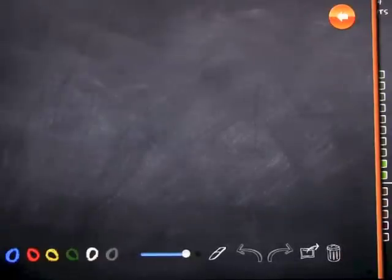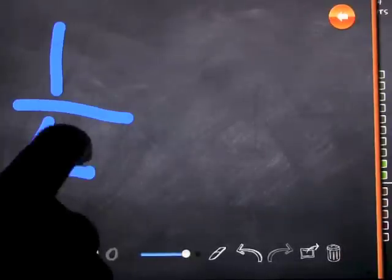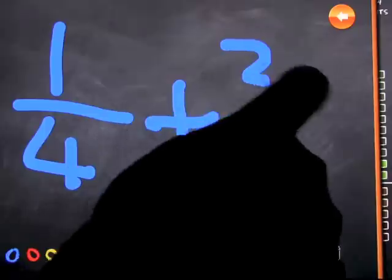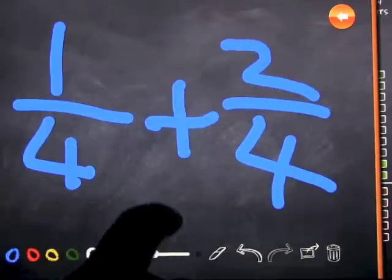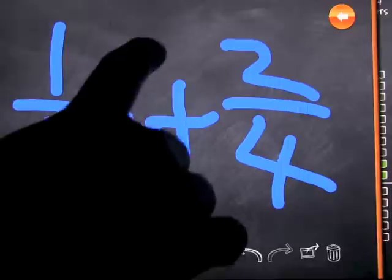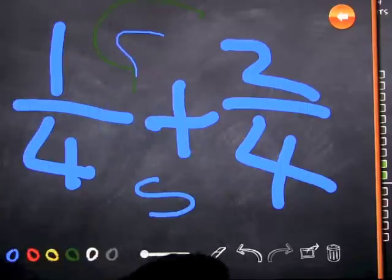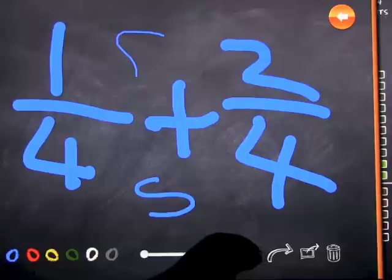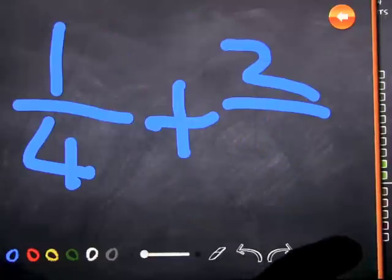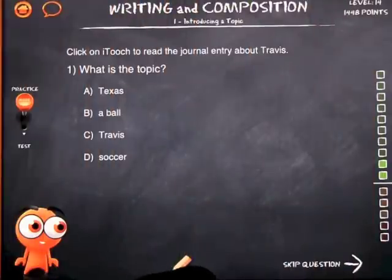This little pencil at the bottom comes in handy when you're looking at other subjects like math and science and want to write something down to help you understand. You can change the width of the pencil and the color, erase certain parts, go back a step if you make a mistake, share it, or just delete the whole screen. A calculator will also pop up at the bottom if it's a question that may require some help with calculation.